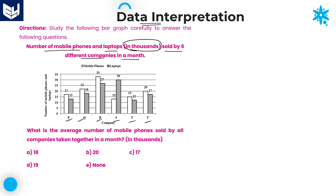For company P, the number of mobile phones sold is 17,000, whereas the number of laptops sold is 13,000. Similarly, the number of mobile phones sold by company Q is 22,000 and laptops are 18,000. For R, mobile phones are 33,000. Like that, we need to take the values. Based on the given information, we need to solve the questions one by one.